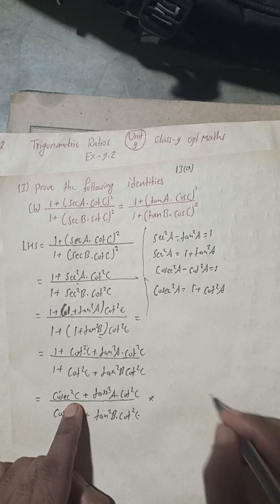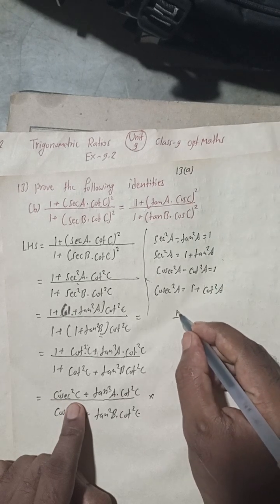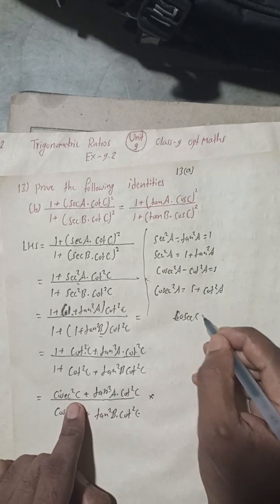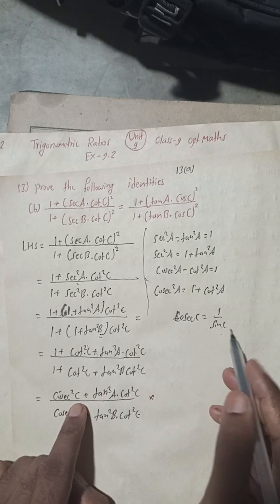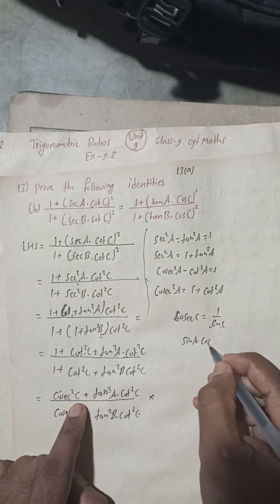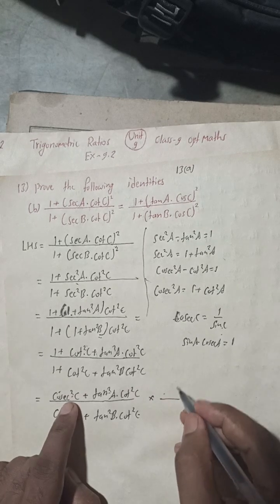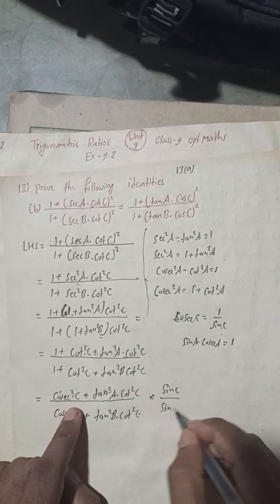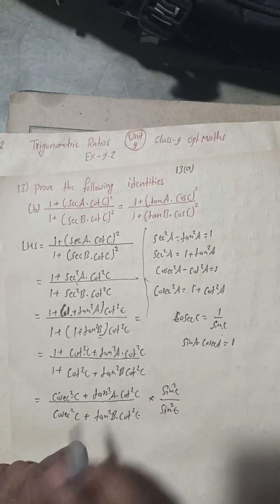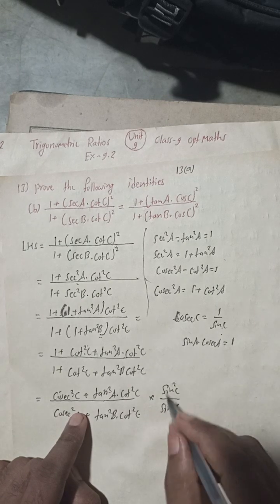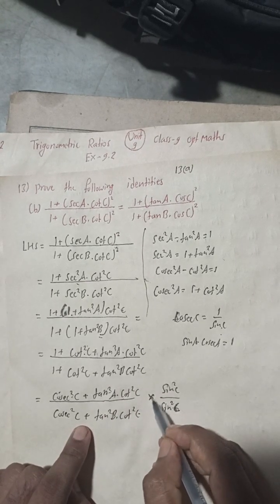We know 1/cosec²C = sin²C, and sinA · cosecA = 1. So we will multiply both numerator and denominator by sin²C. Since sin²C divided by sin²C equals 1, multiplying by sin²C/sin²C does not affect the expression.